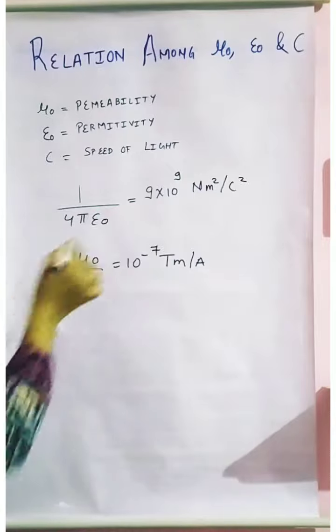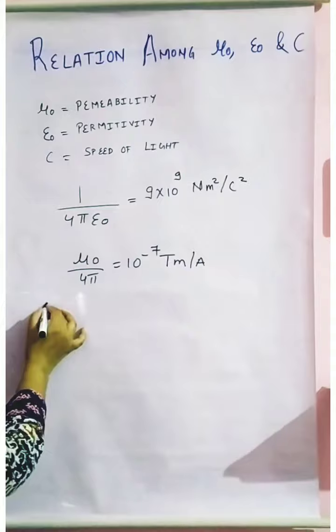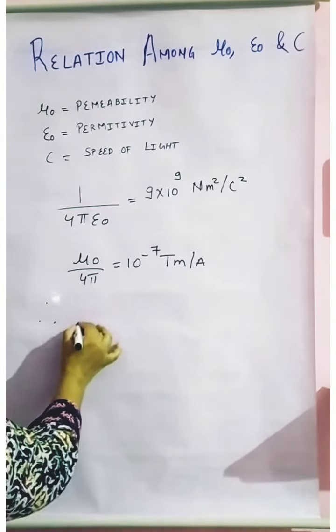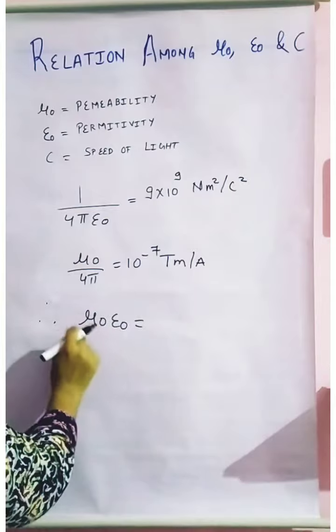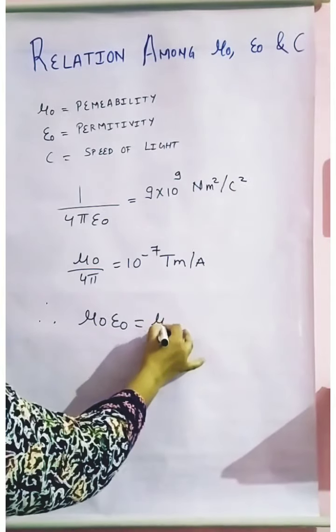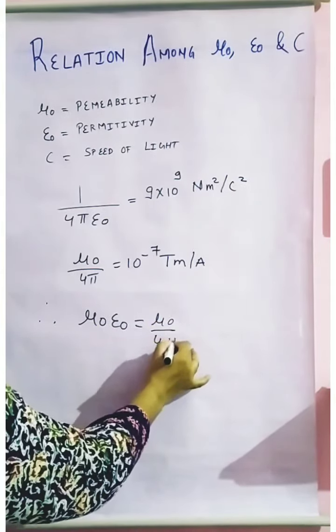So if you will compare these two equations, you can find that we were left with the multiplication of μ₀ into ε₀. So what is the value of μ₀? μ₀ value is μ₀ upon 4π. And what is the value of ε₀? If you will see, ε₀ here is in denominator, so we will write it down as 4πε₀ upon 1. Correct.